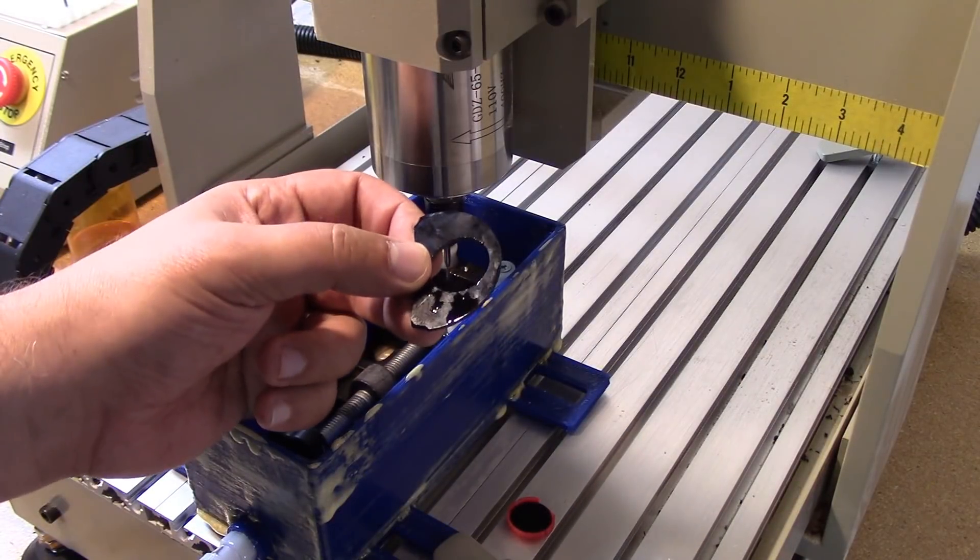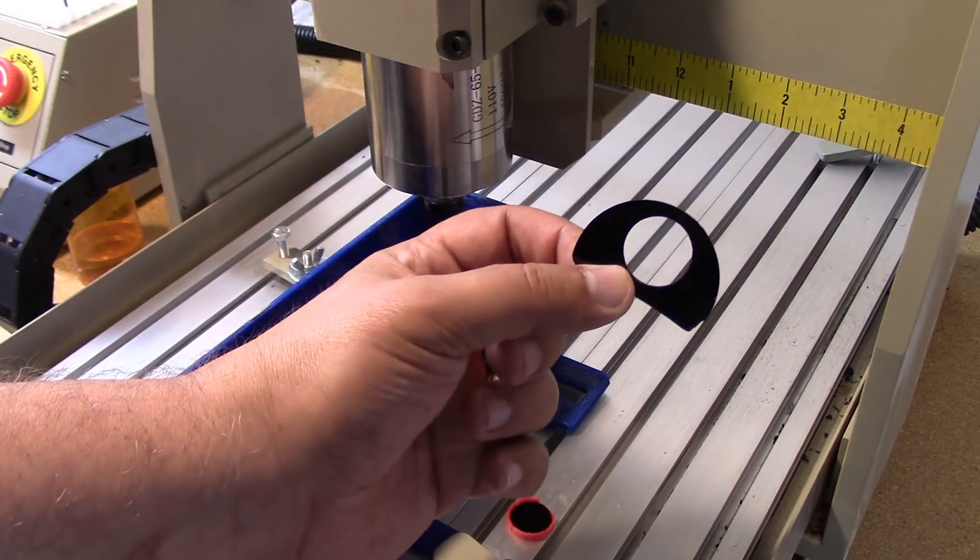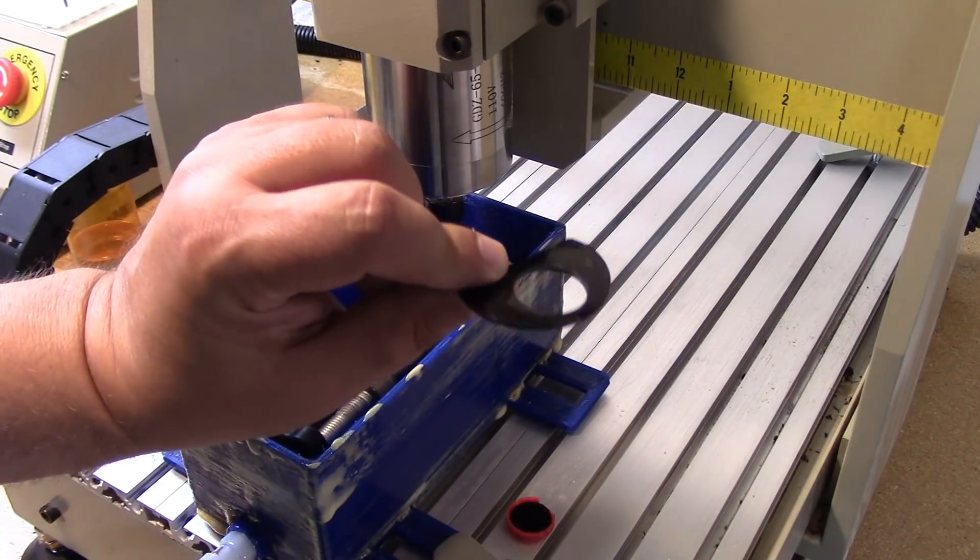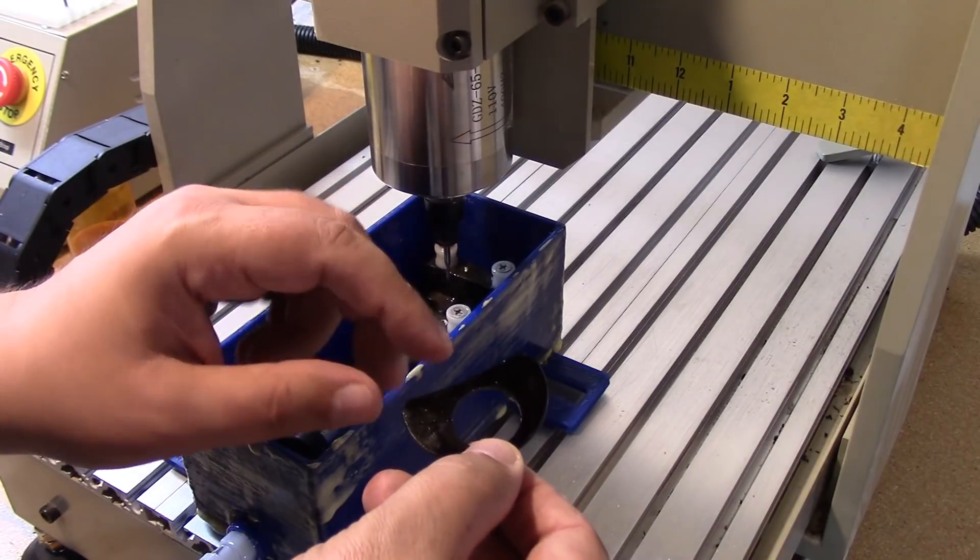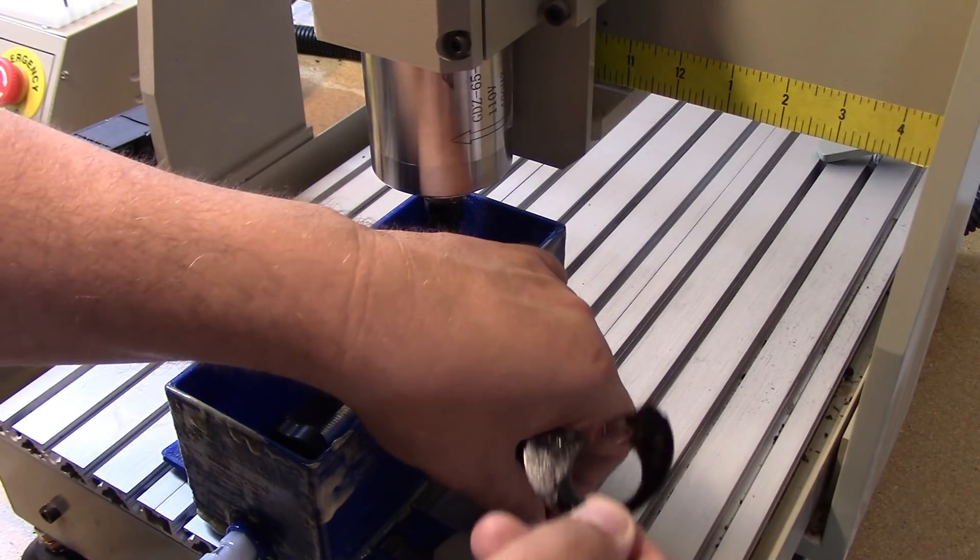Here we are back from the time-lapse, and we have success, folks. Cut out a perfect circle. There was a little bit of flaking as it cut through, but really a pretty clean cut. I'm very happy with this.